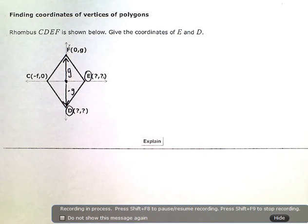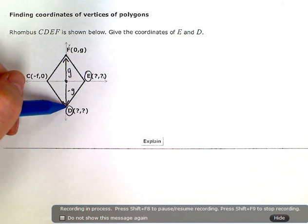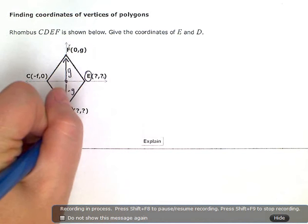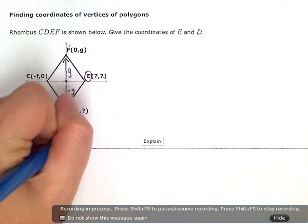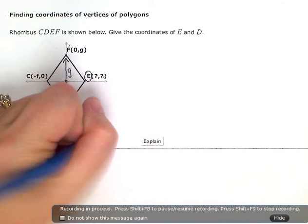So whatever, however many units this is going up, I would have the exact same thing but negative going down. So the coordinates of D are going to be 0 right or left, but negative a, the opposite of this one.